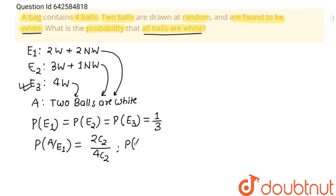Next, P(A|E2) is the probability of drawing two white balls from the second case. There are three white balls in case two, so the number of ways to draw two white balls is 3C2, and the total ways to draw two balls from four is 4C2.